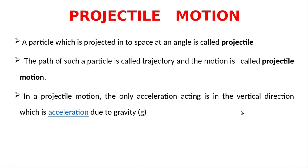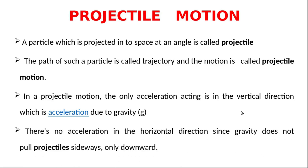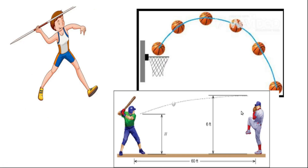In a projectile motion, acceleration is acting only in the vertical direction and is due to the force of gravity. There is no acceleration in the horizontal direction since gravity does not pull the projectile sideways — it pulls only in the downward direction. These are some examples of projectile motion.